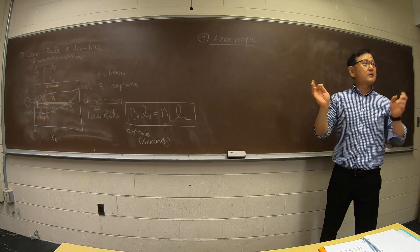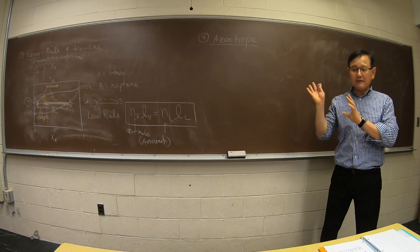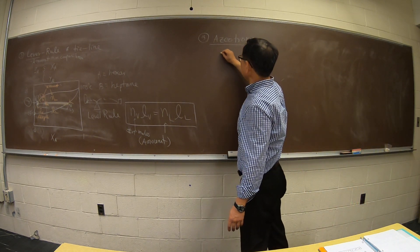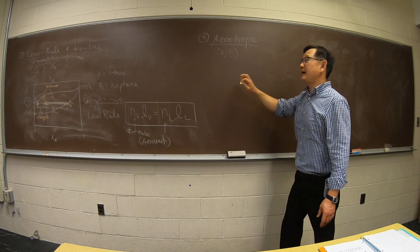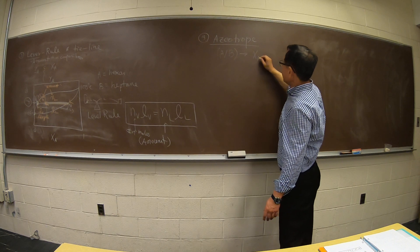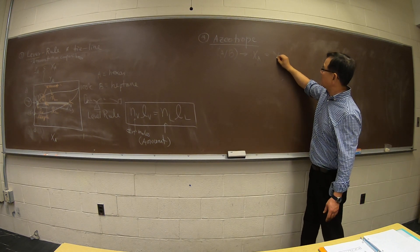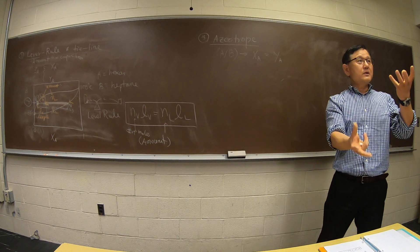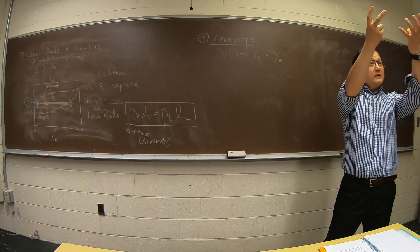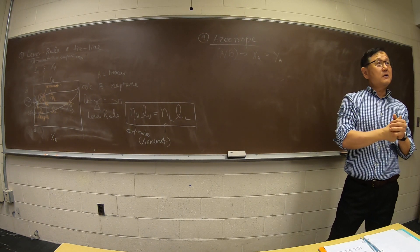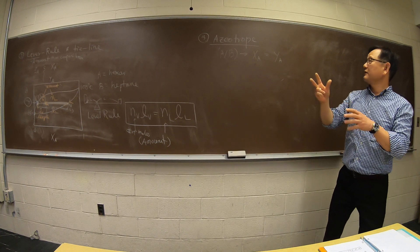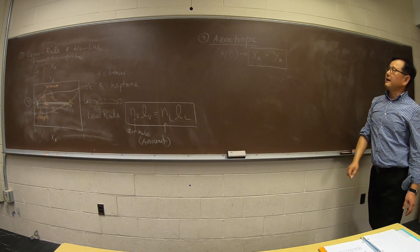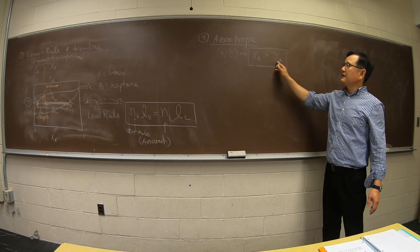I want to talk about this topic called azeotrope. This is one of my favorite topics in distillation. Azeotrope means it is a mixture, an A and B mixture, where the composition of the liquid is the same as the composition of the vapor. Normally mixtures have different boiling points, so the less volatile component won't vaporize as much — but in some exceptional cases, the liquid and vapor compositions are the same.